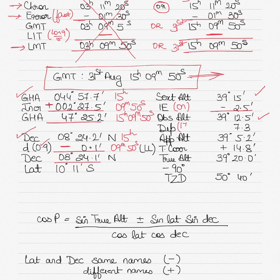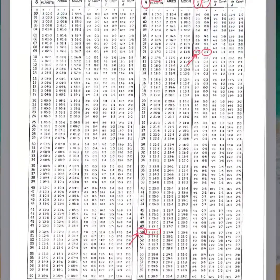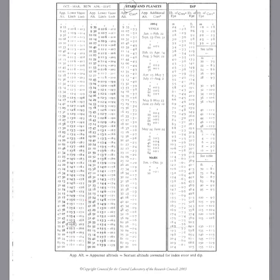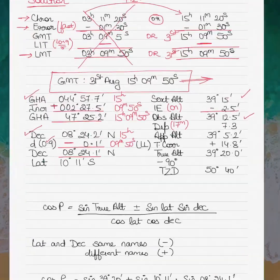We then find the height of eye correction — known as dip — for 17 meters from the nautical almanac. The 17-meter height of eye falls between 16.9 and 17.4 meters, giving a dip correction of minus 7.3. Height of eye correction is always negative. Applying this gives an apparent altitude of 39 degrees 5.2 minutes.